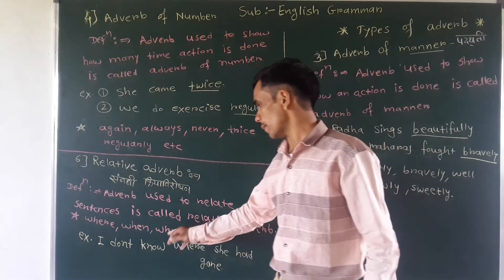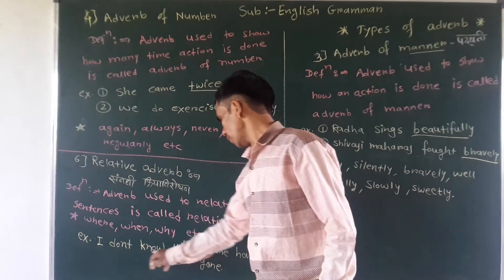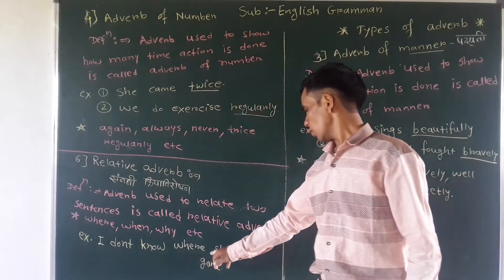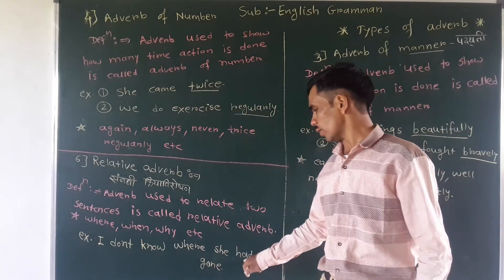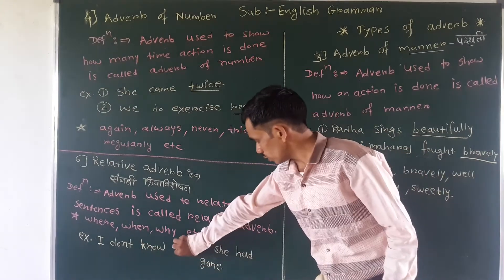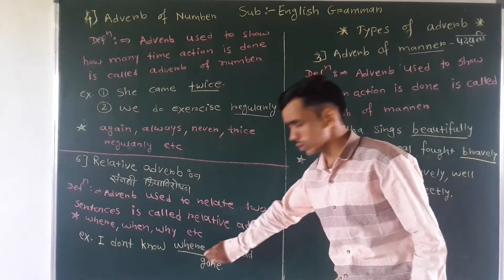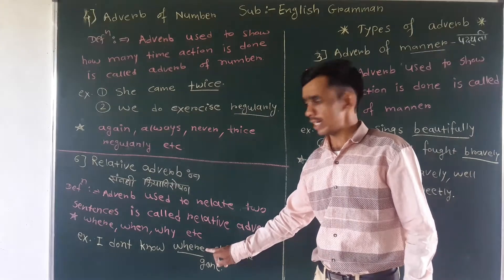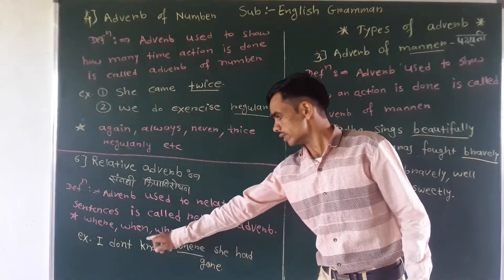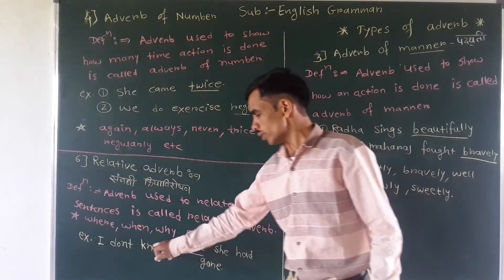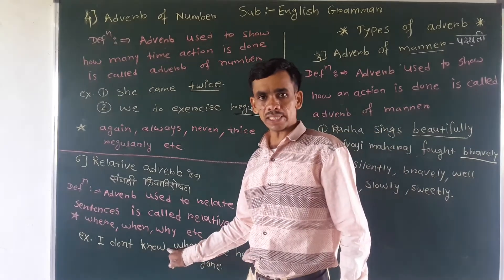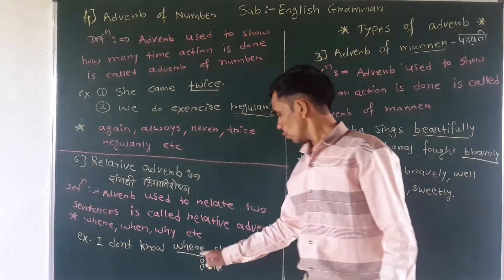It means we show the relation between two sentences or two clauses. For example: I don't know where she had gone. So the word 'where' shows the relation between these two things — I don't know, and mujhe bata nahi.